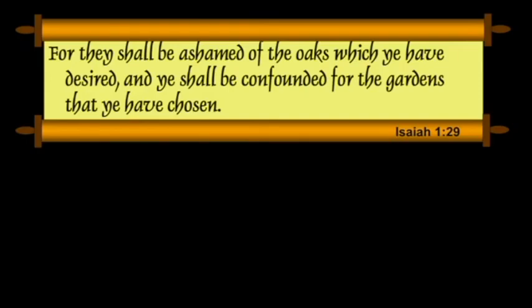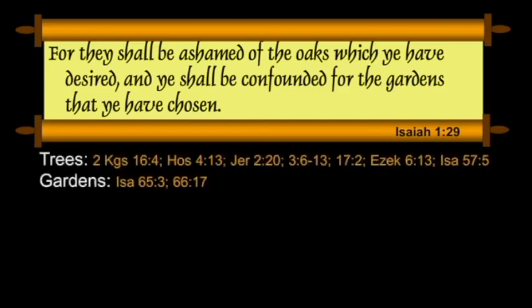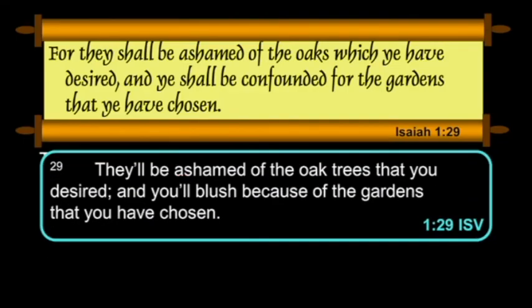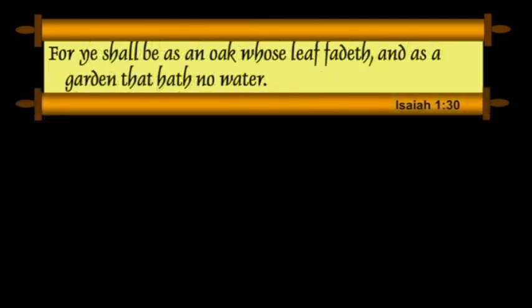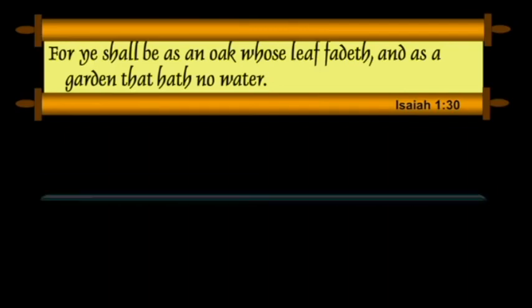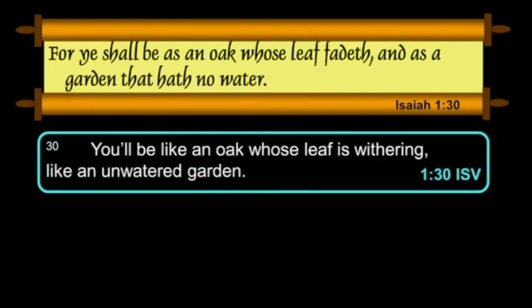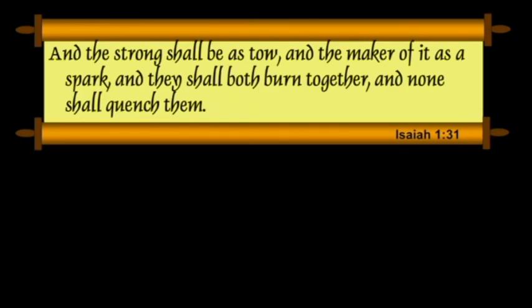"For they shall be ashamed of the oaks which ye have desired, and ye shall be confounded for the gardens that ye have chosen." If you want to dig into trees and gardens especially as idioms, you can track those down at your own leisure. The ISV: "You'll be ashamed of the oak trees that you desire; you'll blush because of the gardens that you have chosen. For ye shall be as an oak whose leaf fadeth, and as a garden that hath no water." Or: "You'll be like an oak whose leaf is withering, and like an unwatered garden."